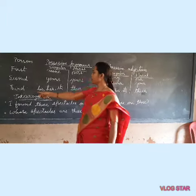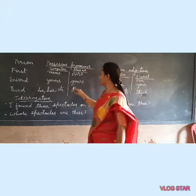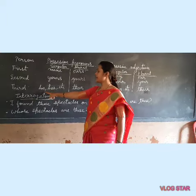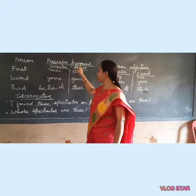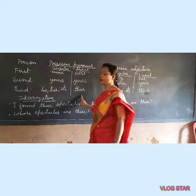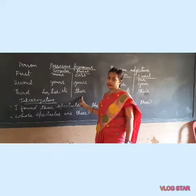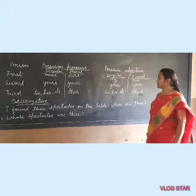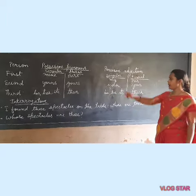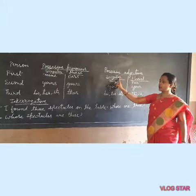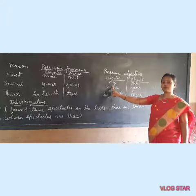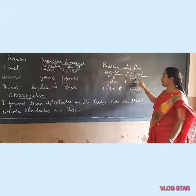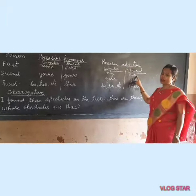Now in third person singular number we use 'his', 'her', 'its', but in plural it becomes 'theirs'. Now we go to possessive adjectives. First person singular number we use 'my', and first person plural number we use 'our'.